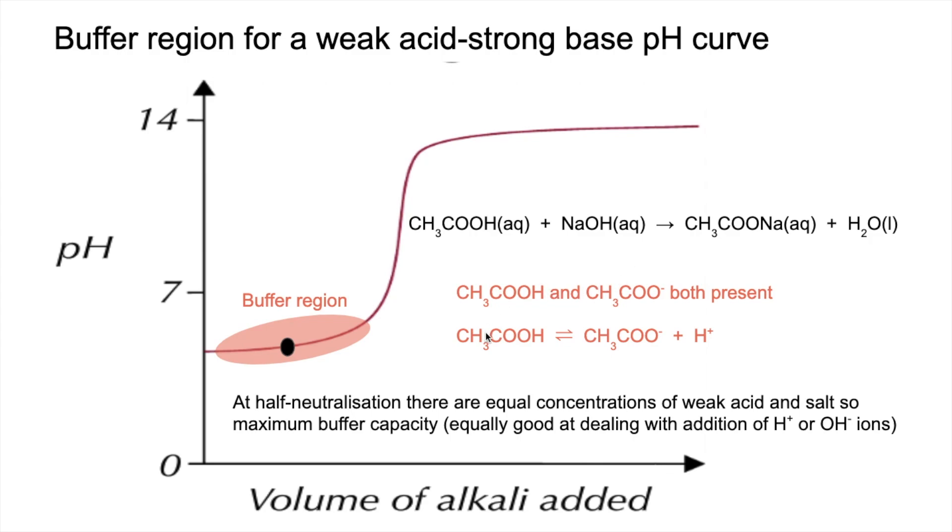For the buffer to work, if you add H⁺ ions, you need a store of ethanoate ions to mop them up and send the equilibrium to the left. If you add OH⁻ ions, that's going to remove H⁺, so you need your reservoir of weak acid to dissociate more and put the H⁺ back. At half neutralisation, you've got equal quantities of these.